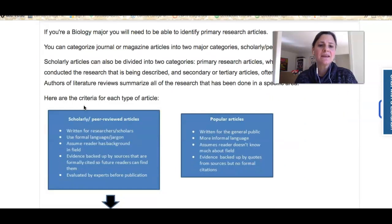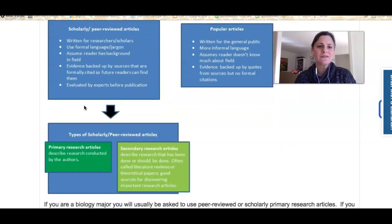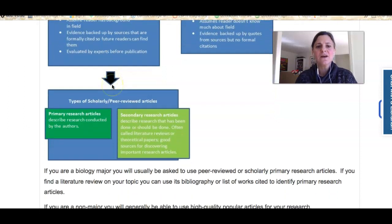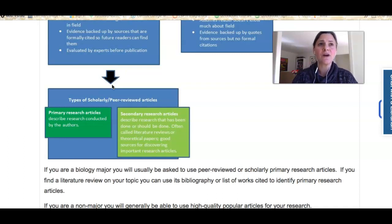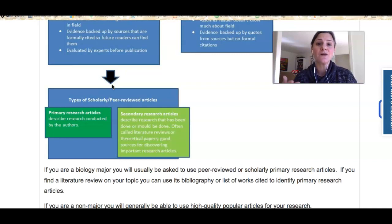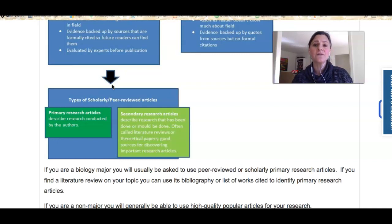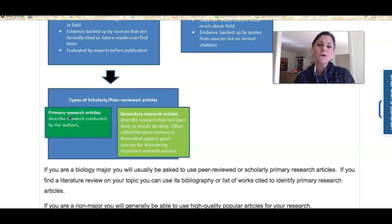Within scholarly or peer-reviewed articles, there are two other types. Often when you're a biology major, what you're looking for is a primary research article — an article that describes the research done by the writers, like a lab report on steroids. There are also literature reviews, which summarize all the research done on a particular topic, and can help you identify primary research articles. You'll need to be able to identify a primary research article for your class.